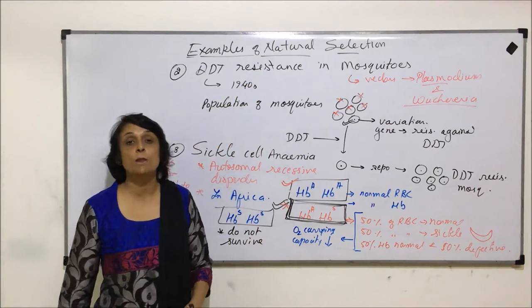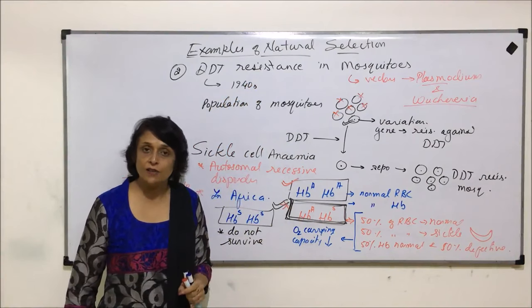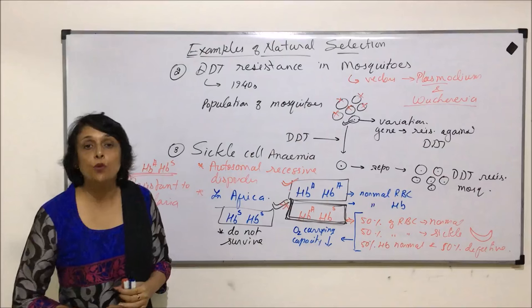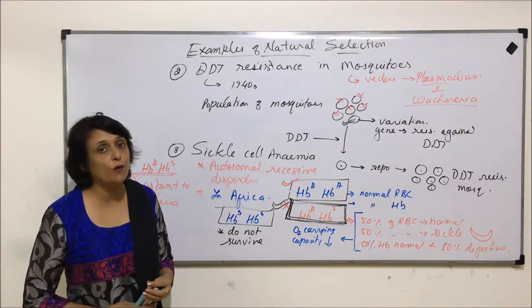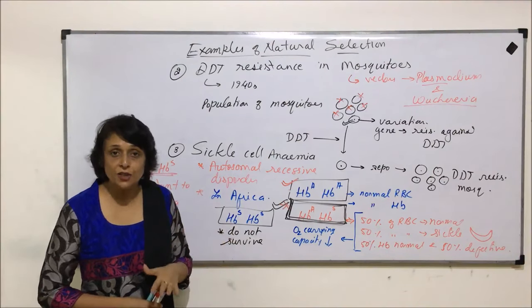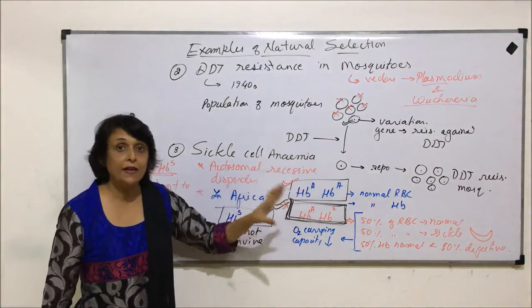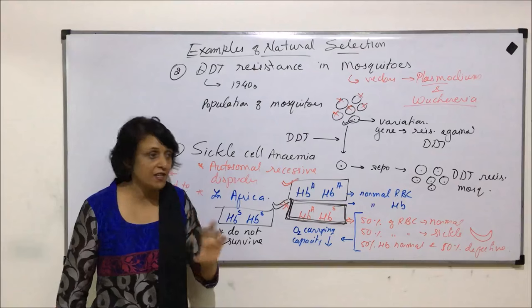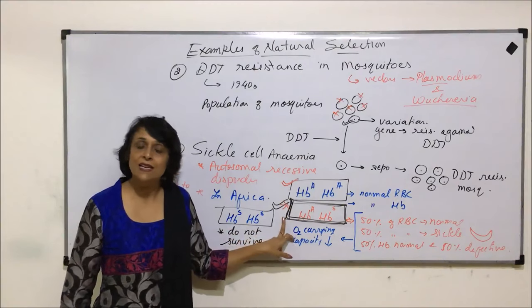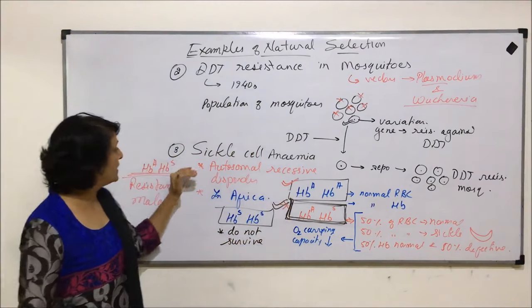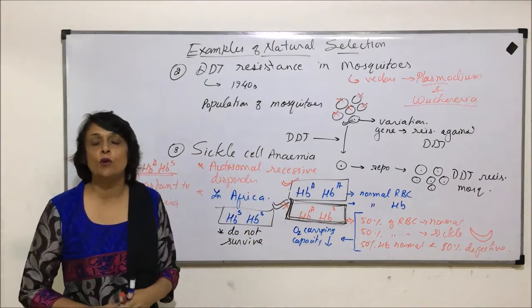Again, this is an example in support of natural selection. Nature selects those organisms which are suited for that particular condition. It may not be genetically perfect, but if it is perfect for that condition, then that is going to be selected. After these examples, we will talk about a few more examples.